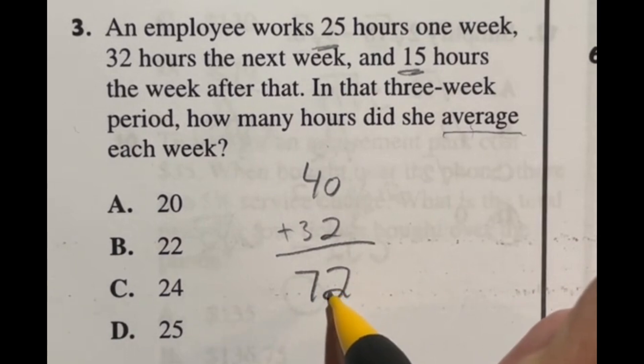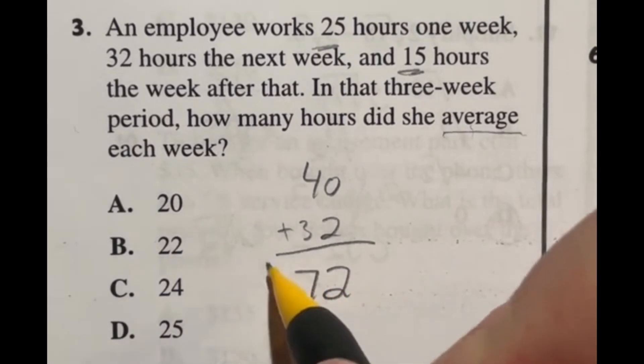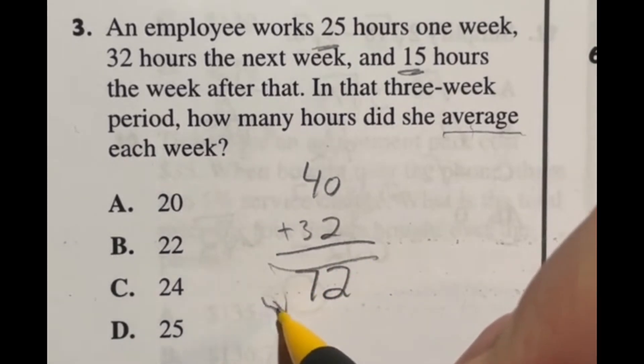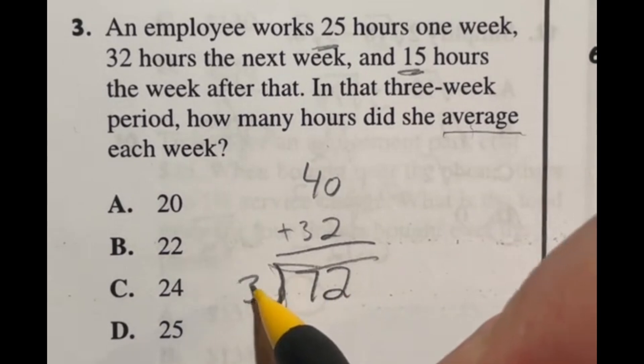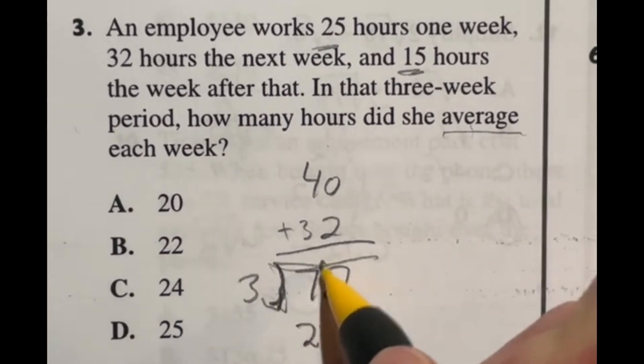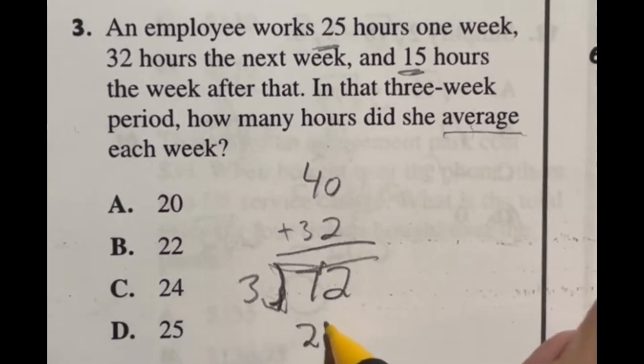Now remember, we need to find the average of these three. So we need to divide this number by three still. Look like a square root there. And if I look at that three goes into seven two times with one leftover three goes into 12 four times. So our final answer here should be 24, which is answer C.